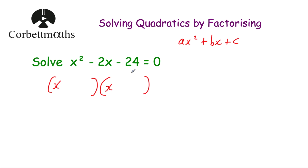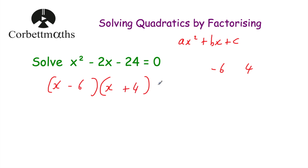We look at the constant c here — that's minus 24 — and we need two numbers that multiply together to give minus 24 and add together to give the b value, which is minus 2. So we want two numbers that multiply to be -24 and add to be -2. That would be -6 and 4, because -6 × 4 = -24 and -6 + 4 = -2. So we put those in the brackets: (x - 6)(x + 4) = 0.